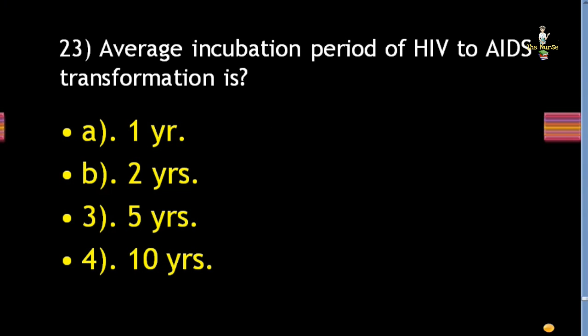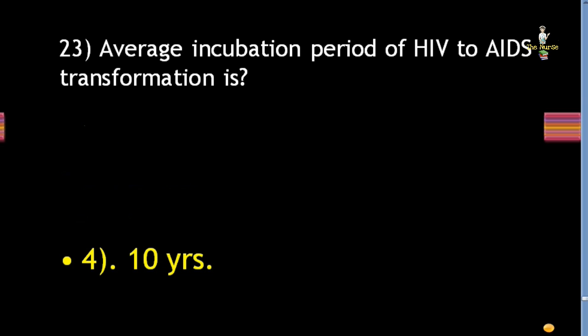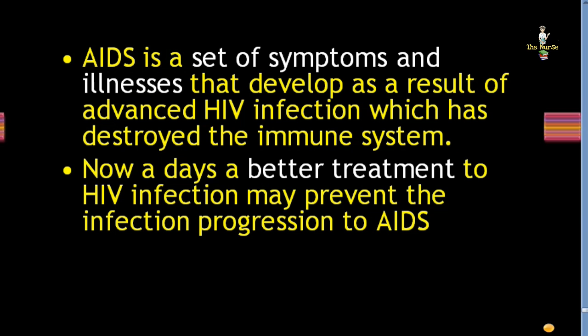Next question: average incubation period of HIV to AIDS transformation is 1 year, 2 years, 5 years, or 10 years? Correct answer is 10 years. AIDS is a set of symptoms and illnesses that develop as a result of advanced HIV infection which has destroyed the immune system. Nowadays, better treatment for HIV infection may prevent progression to AIDS.